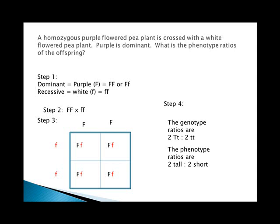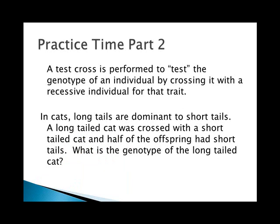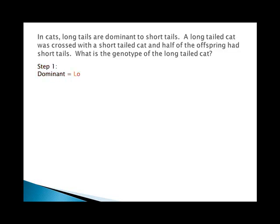A test cross is performed to test the genotype of an individual by crossing it with the recessive. In cats, long tails are dominant to short. A long-tailed cat was crossed with a short-tailed cat and half the offspring had short tails. What's the genotype of the long-tailed cat? In short-tailed cats you can only have two recessives, so dominant is long and recessive is short.